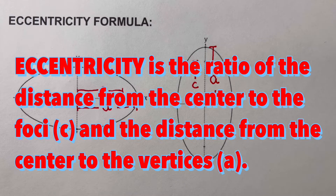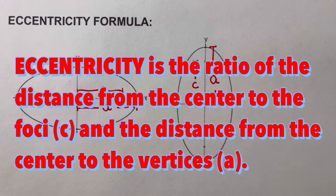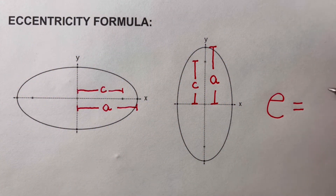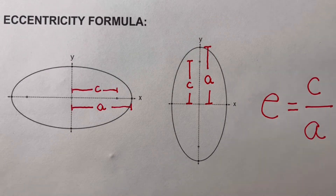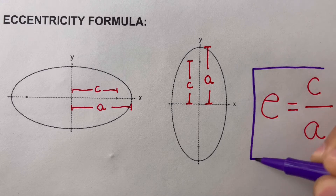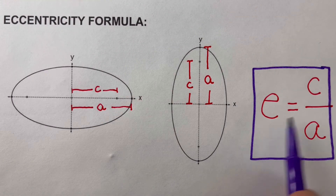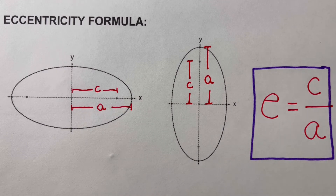Mathematically, eccentricity is the ratio of the distance from the center to the foci (letter c) and the distance from the center to the vertices (letter a). We can therefore write the equation of eccentricity as e = c/a. This is the formula for the eccentricity of an ellipse. Now let's look at some examples.